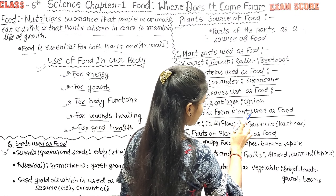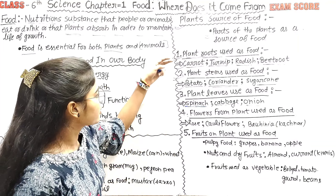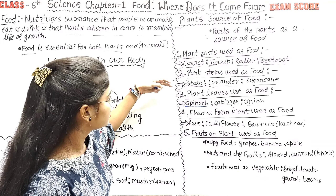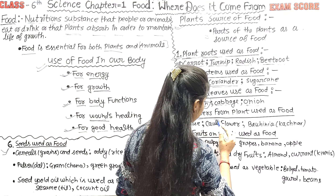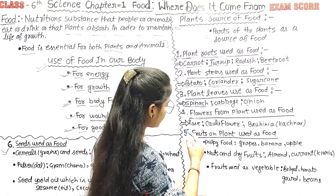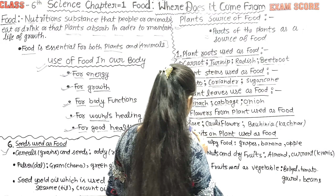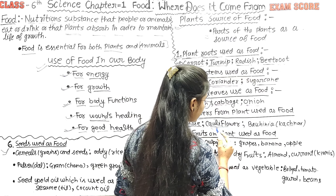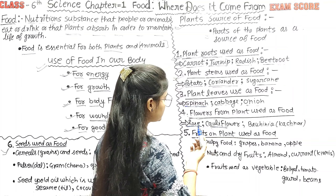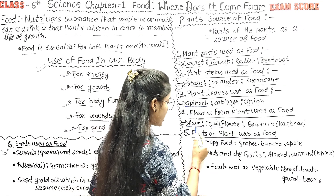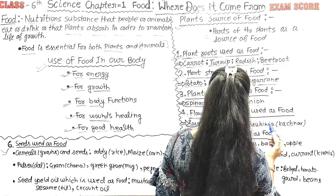The fourth point is flowers from plants used as food. First was root, then stem, then leaves, and now flowers. Examples include cauliflower and banana flower. Many people eat cauliflower and banana flower as vegetables.